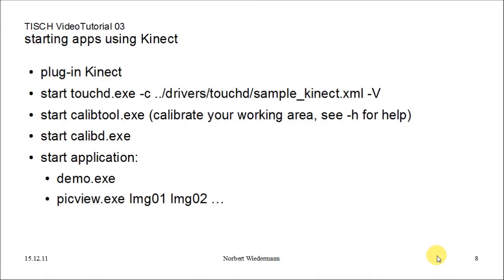Now we are prepared for some LibTisch Kinect action. First, we have to connect the Kinect to our computer. Second, we have to start the daemon to recognize the touches with the Kinect config file from the repository. Then we have to generate a calibration for the current setting using the Calib tool. Having that, we start the Calib daemon with the just-created calibration. And then finally we can start our application. To give you an impression of how that all looks, I will demonstrate that now.